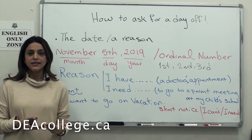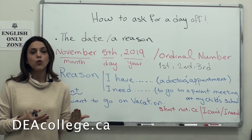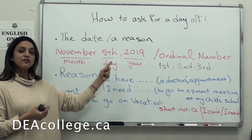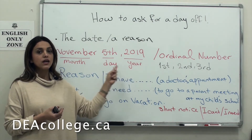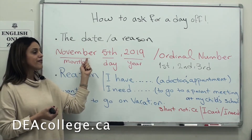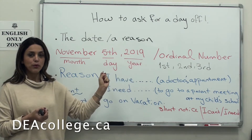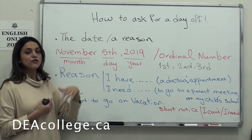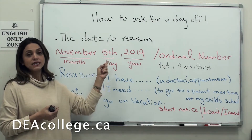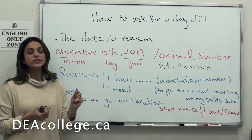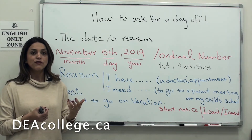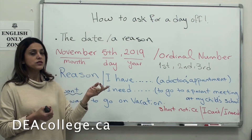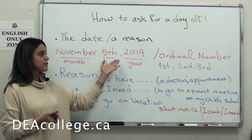The way you write the date in speaking or writing in North America: first you mention the month, then the day, then the year. For example, November 5th, 2019. The month comes first. And don't forget — you must use ordinal numbers: first, second, third, fourth. Never say one, two, three for a date. You must use ordinal numbers, like November 5th, 2019.